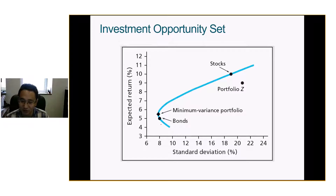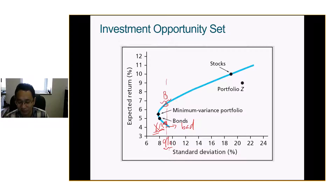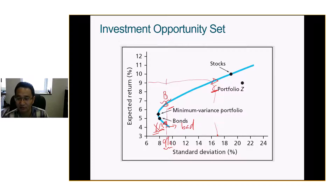What becomes interesting is: if we compare points A and B, they have the same standard deviation, but portfolio B has a higher return. So what Markowitz says is: if that's mathematically true, you shouldn't invest in A at all. A is bad because it gives you lower return while your risk is the same. Also, comparing B and C tells you that in order to have a higher return, you have to accept higher risk.